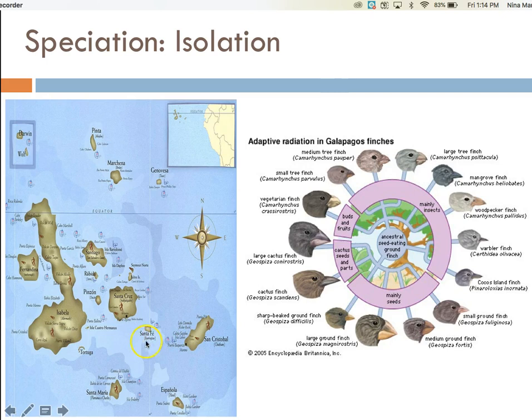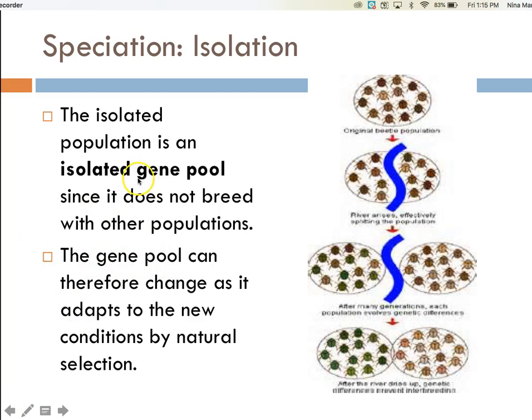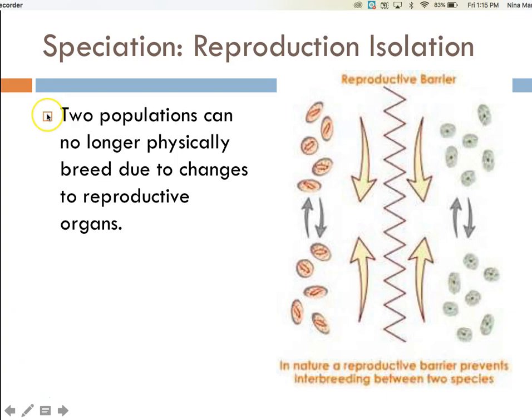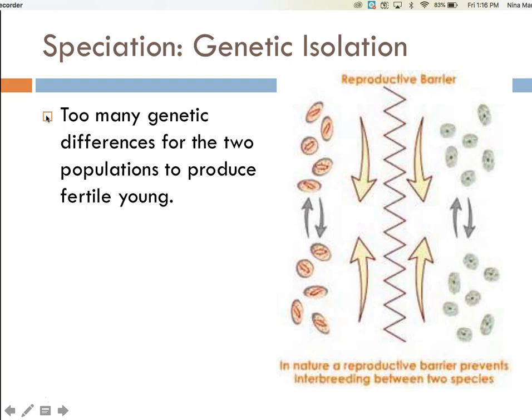To recap: the isolated population is an isolated gene pool since it does not breed with other populations. The gene pool can therefore change as it adapts to new conditions by natural selection. Natural selection might result in changes to appearance or behavior of the populations, and there is no longer attraction among the two types, so they no longer breed — resulting in different species. Natural selection might result in the two populations no longer being able to physically breed due to changes in the reproductive organisms. Or natural selection might simply result in too many genetic differences for the two populations to produce fertile offspring.